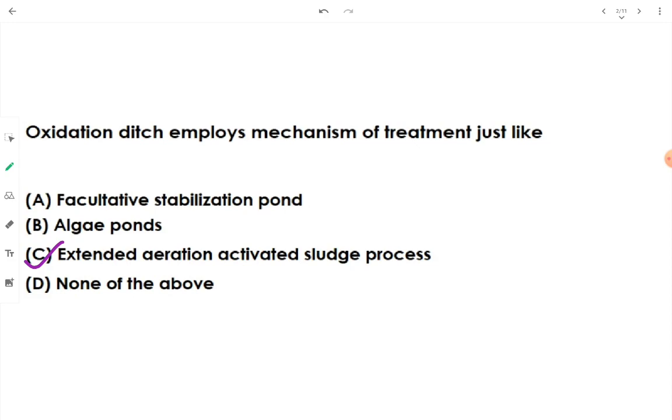It has an oval shape when you look at the oxidation ditch from the sky or in plan. It looks like an oval-shaped channel and there are rotors that continuously mix the sewage and introduce oxygen inside. The retention time of the sewage inside the oxidation ditch is high, just like extended aeration, which is why the similitude has been discussed here.